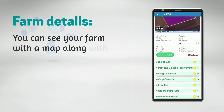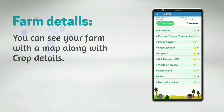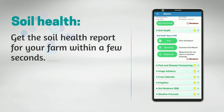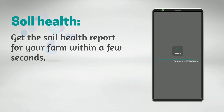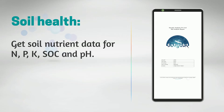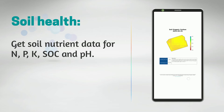You can see your farm with a map along with crop details. Soil Health: Tap on the view option to see the soil health report. You can get your farm soil analyzed for five important parameters: Nitrogen, Phosphorus, Potassium, Soil Organic Carbon, and Soil pH. The report will be available in PDF format.